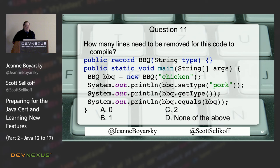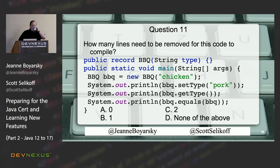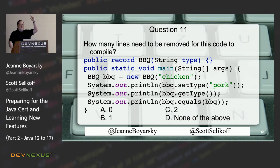Last question on sealed classes: how many lines need to be removed for this code to compile? The answer is C — two lines need to be removed.